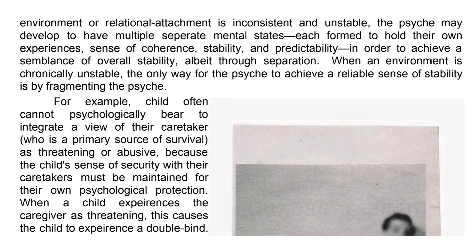For example, a child often cannot psychologically bear to integrate a view of the caretaker — a primary source of survival — as threatening or abusive, because the child's sense of security with their caretaker must be maintained for their own psychological protection. When a child experiences the caregiver as threatening, this causes a double bind: the child feels compelled to approach the caregiver for survival, yet also feels compelled to avoid them because the caregiver is threatening.